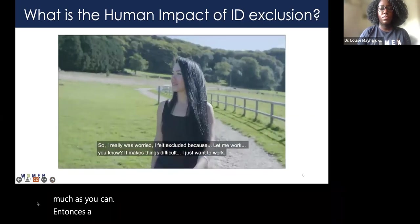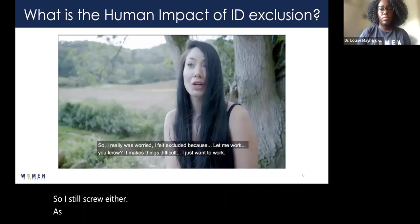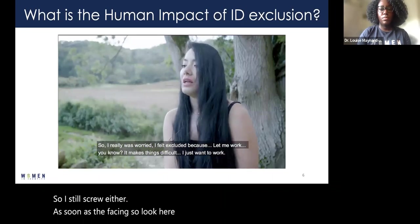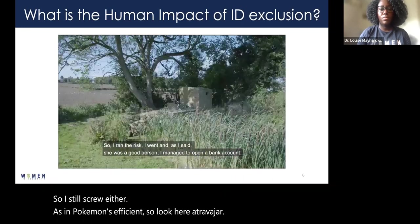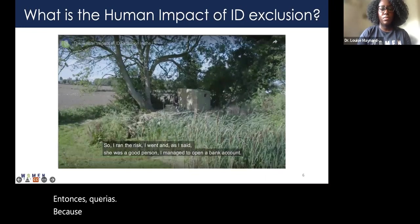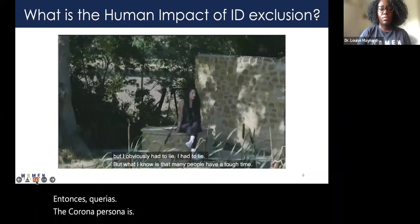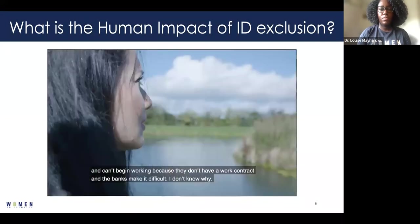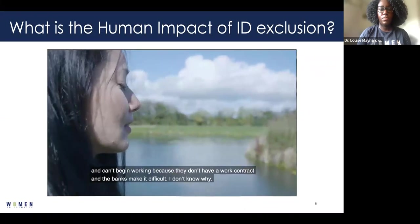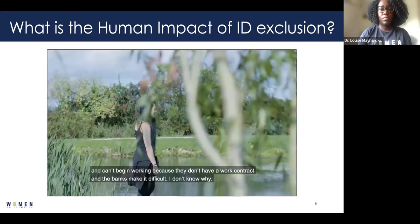Interview subject 2 (Spanish, translated): 'I feel scared about being excluded because it won't let me work — it's a little more difficult. I just want to work. So I took the risk and found a good person and was able to open a bank account, but obviously I had to lie. But what I know is that a lot of people have a hard time — they can't start working because they don't have that contract, and the banks make it very difficult.'